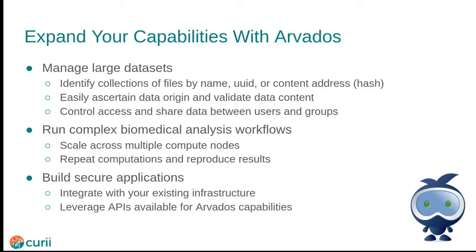The portable data hash is an immutable identifier computed based on the content and structure of the files making up the collection, and if any of those files change, you get a different portable data hash. Because the portable data hash is based on the content of the collection, you can verify that the actual data has the expected hash, as well as easily determine if a copy of the collection is the same as the original. Access to collections is controlled, and collections can be shared with users and groups at different levels of read-only or write access. Once data is loaded into the system, you probably want to analyze it. Arvados provides a complete workflow engine closely integrated with the storage system to ensure efficient data movement, handling the scheduling of compute jobs across multiple nodes, and keeping a record of everything done so it is easy to repeat previous computations.